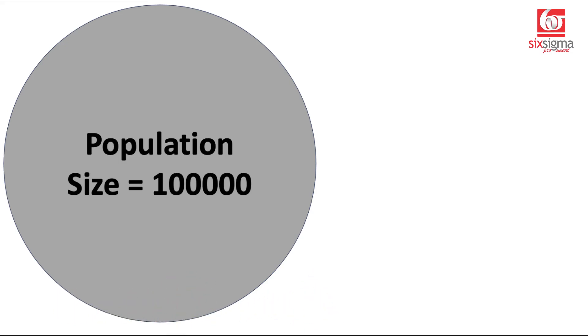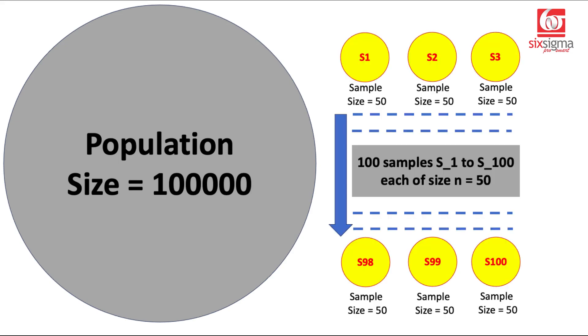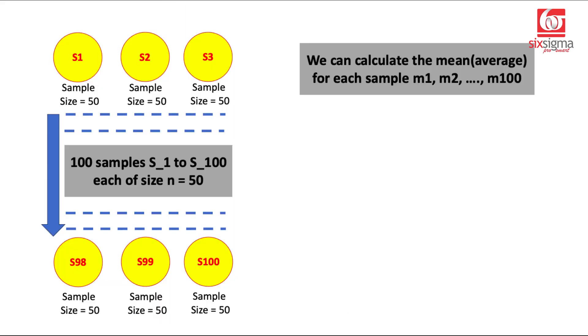But let's just understand what is the central limit theorem. Let's say you have a large data of 100,000 observations from which you collect samples of size 50 each and you collect hundreds of samples. So what am I saying? I'm saying the parent population has 100,000 observations. You are only collecting one sample at a time. Each sample has 50 observations. It could be the age of 50 individuals. It could be the income of 50 individuals.